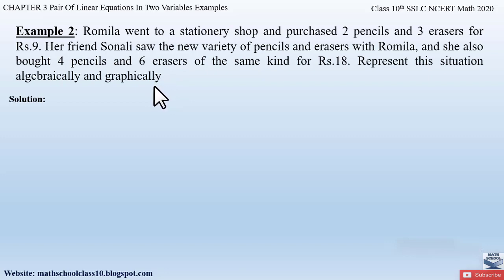This example is again similar to the previous example, Example 1. Here there are two friends, Romila and Sonali, who go and purchase pencils and erasers from a stationary shop. Romila purchases two pencils and three erasers for rupees 9, while Sonali bought four pencils and six erasers for rupees 18. We have to represent the situation algebraically and graphically.